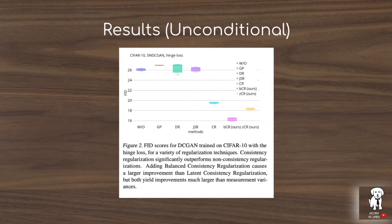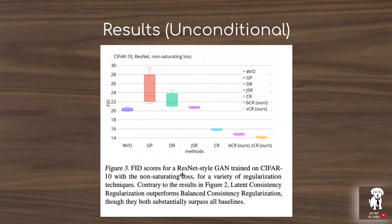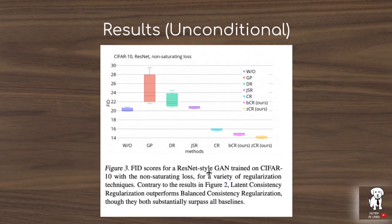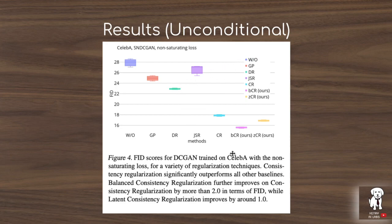Results of unconditional GAN image synthesis on the CIFAR-10 dataset with the DCGAN architecture show that consistency regularization outperforms Wasserstein GAN and other loss function formulations. The improved version — with balanced consistency regularization on both generated and real images, and latent space regularization — shows further gains. A similar trend is seen with the ResNet-style architecture and on the CelebA dataset, showing these gains generalize across datasets and are not limited to CIFAR-10.